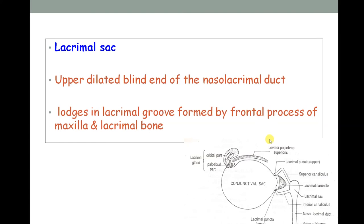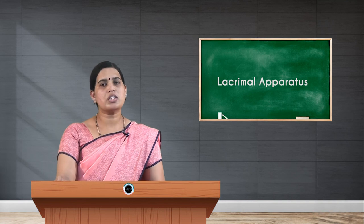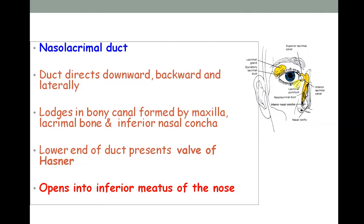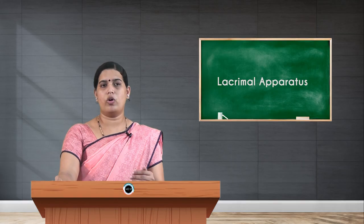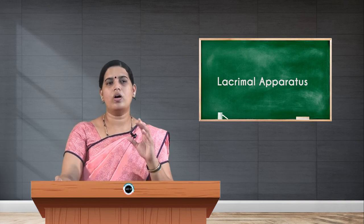The nasolacrimal duct leads from the lacrimal sac downwards, backwards, and laterally. It is formed by the maxilla bone, the frontal process of the maxilla, a portion of the lacrimal bone, and also involves the inferior nasal concha, after which it opens into the inferior meatus of the nose. This duct is also guarded by a valve called the valve of Hasner.